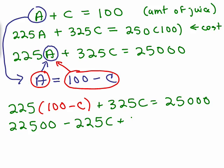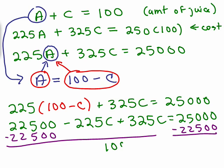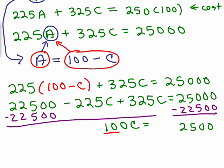Expanding gives 22,500 minus 225C plus 325C equals 25,000. Combining like terms on the left: 325C minus 225C is 100C. Subtracting 22,500 from both sides gives 100C equals 2,500. Dividing both sides by 100, we get C equals 25.